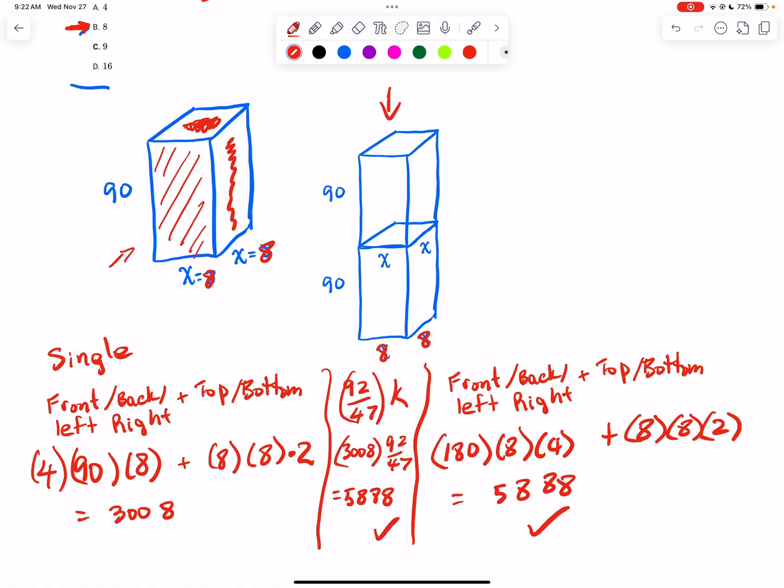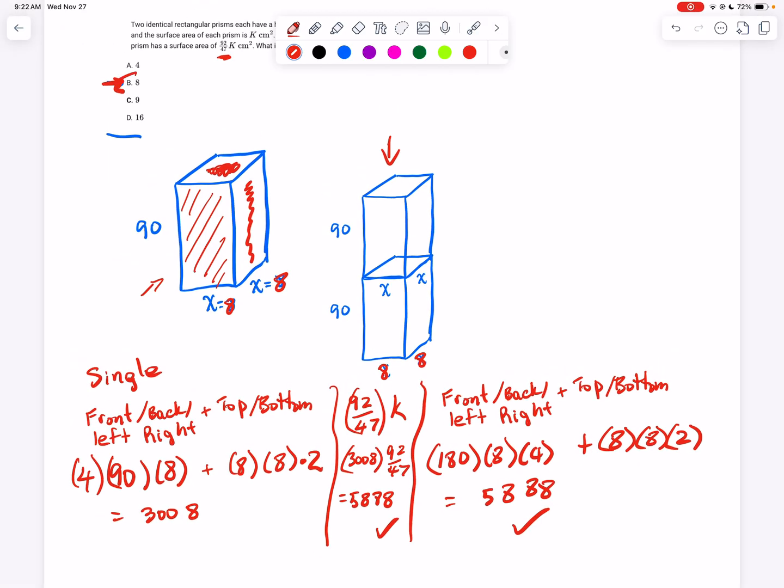This is good news - that means we can select answer choice B. We don't have to check any of the others and we're done. But if it did not work and it was close to being correct, you would want to go down to C, and that would be likely your answer if your first answer was close, because those two numbers are close. Hope that helps!